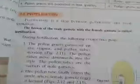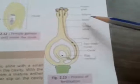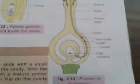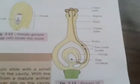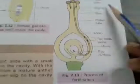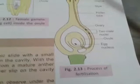Now coming to the topic of fertilization — please see this diagram showing the whole process of fertilization. Fertilization is a step between pollination and seed formation. The fusion of the male gamete with the female gamete is called fertilization.